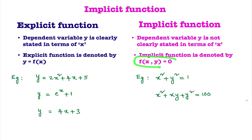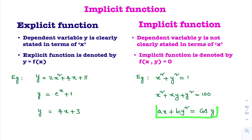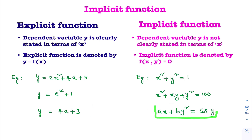Implicit function is denoted by f of x comma y equal to 0. Now consider the example: ax plus by squared equal to cos y. Here, is y clearly expressed in terms of x? No. It is a function in terms of both x and y. By seeing this equation, we can easily say that y is not clearly stated in terms of x. So this is an example of an implicit function.